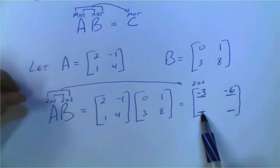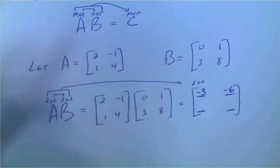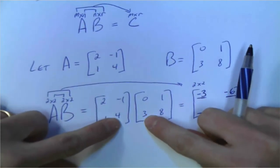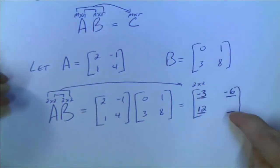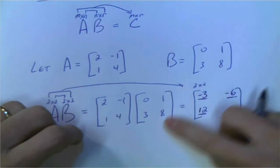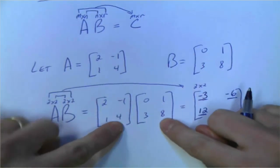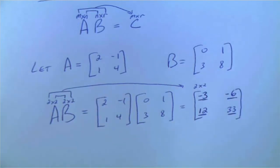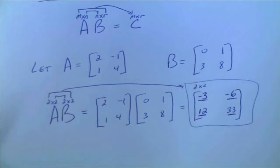For the entry at row 2, column 1: put your fingers in place — that's 0 plus 12, which would be 12. And then to get the last entry at row 2, column 2: put your fingers in place — that's 1 plus 32, which gives you 33. And so this is the new matrix you get when you multiply A and B together.